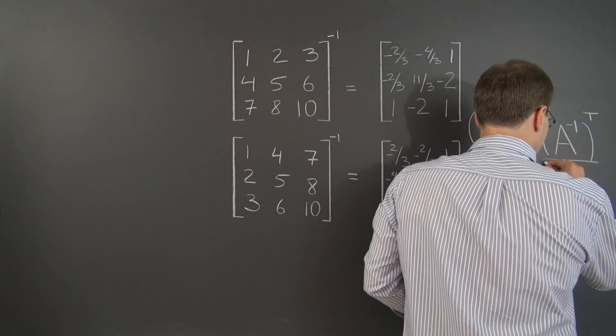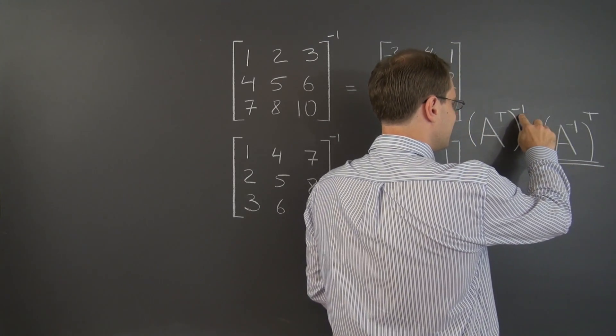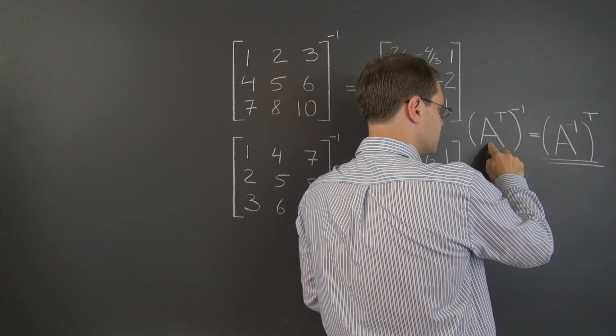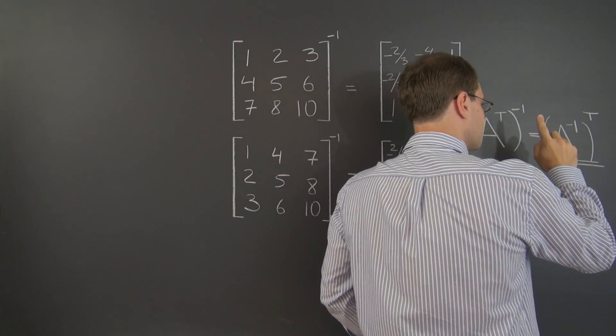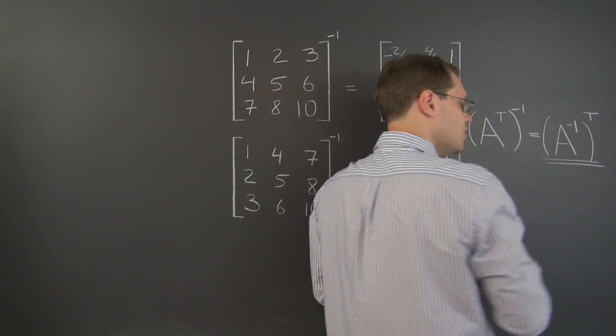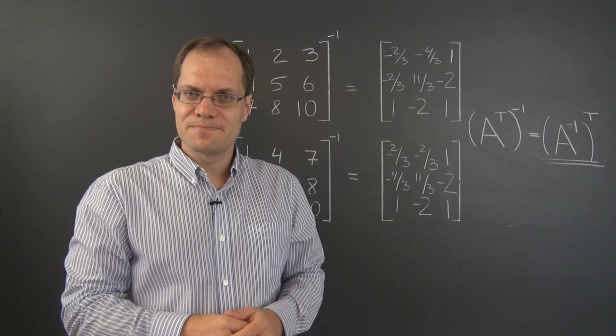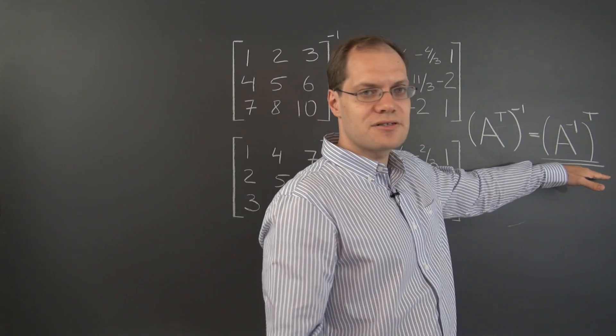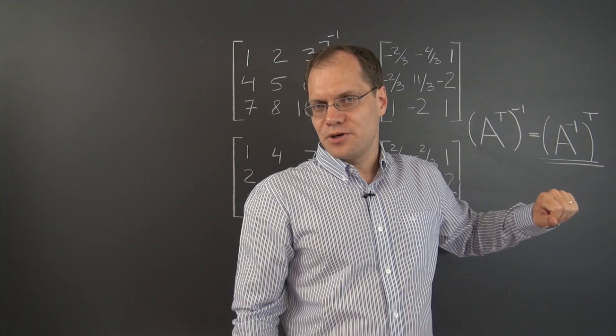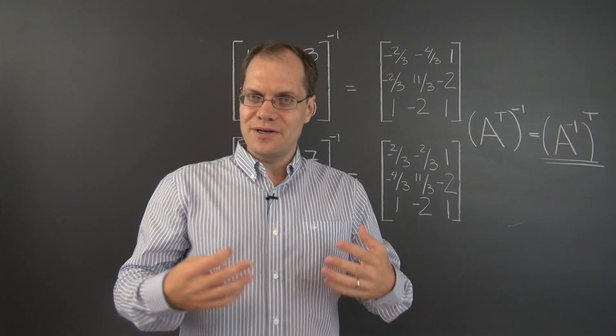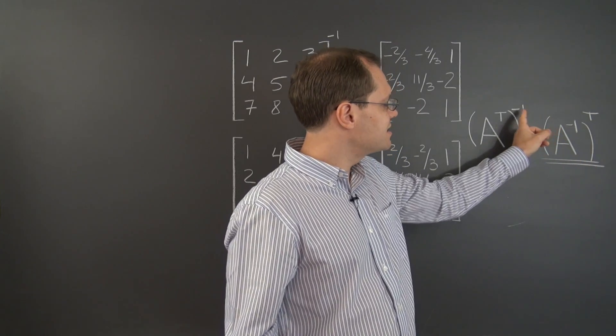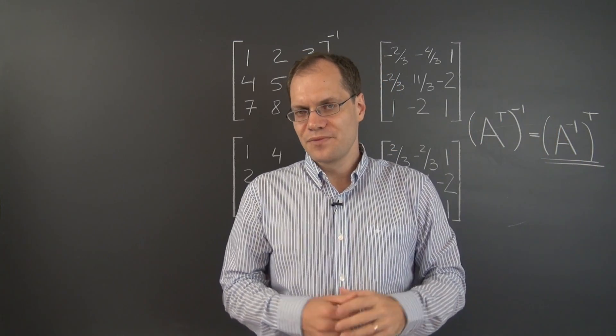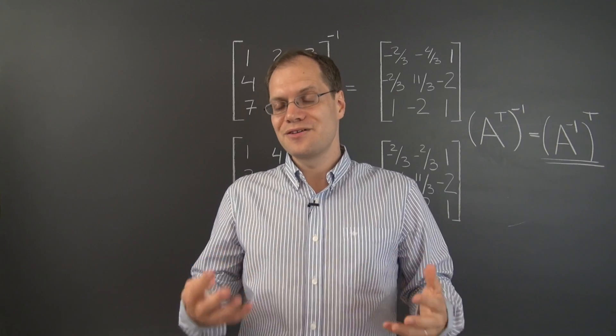That's what would qualify this matrix as the inverse of A transpose. Being the inverse of A transpose means that if you were to multiply by A transpose you would get the identity matrix. Well let's take this matrix multiplied by A transpose and see what we get. If we get the identity matrix then yes this matrix is the inverse of A transpose. If we don't get the identity matrix well then it's not.